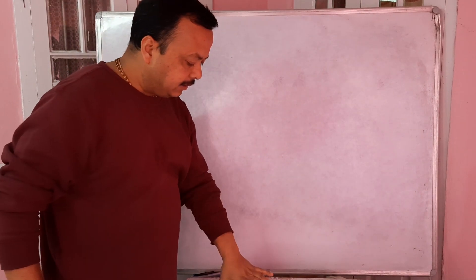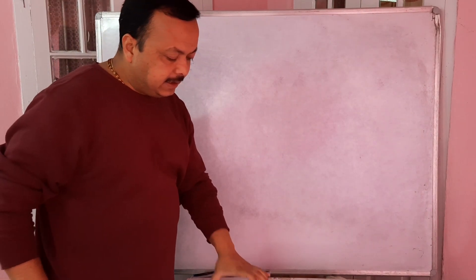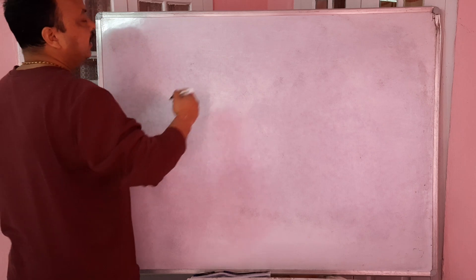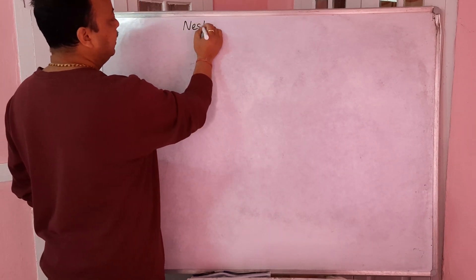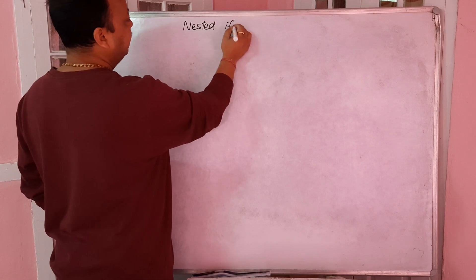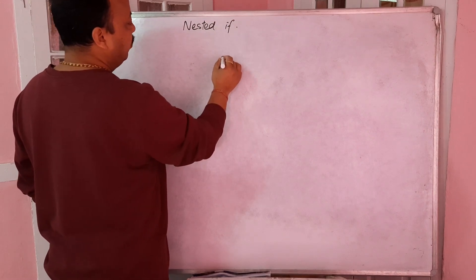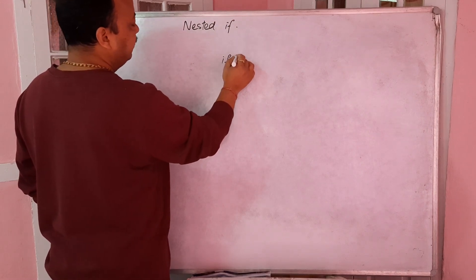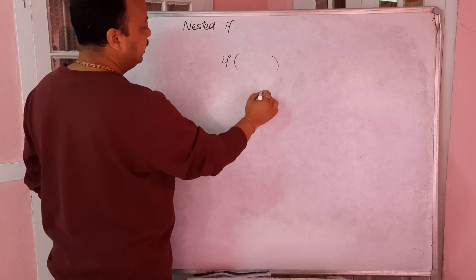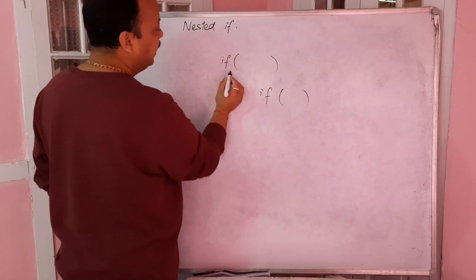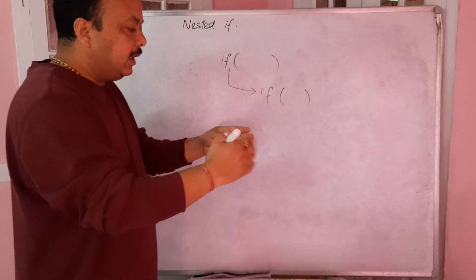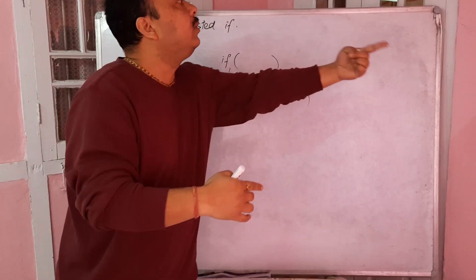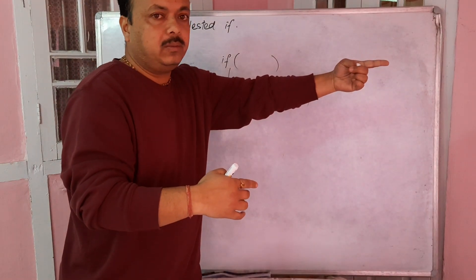The next one is nested if. Nested if means one condition is there, and inside that you have another condition. If you satisfy the outer condition, you have another condition to meet - like opening one door and finding another door behind it that you also have to open.